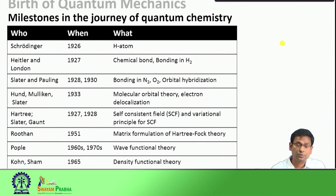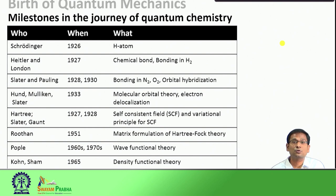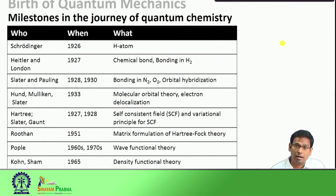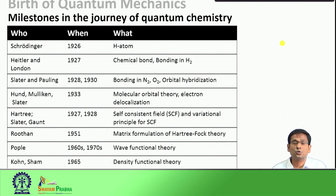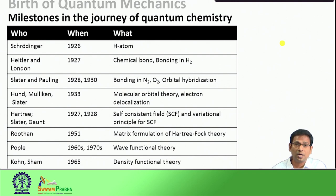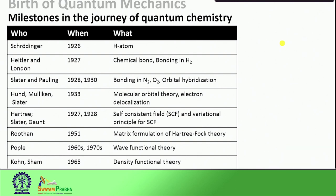To begin with, in 1926 Schrödinger solved the hydrogen atom problem, and soon after Heitler and London provided an explanation of chemical bonding in the smallest possible system - the hydrogen molecule. We cannot describe a chemical bond with complete knowledge unless we invoke the principles of quantum mechanics. The journey continued with Slater and Pauling, who showed how chemical bonding occurs in heavier molecules like nitrogen and oxygen, introducing the concept of orbital hybridization, followed soon after by Hückel, Mulliken and Slater who proposed molecular orbital theory and the concept of electron delocalization.